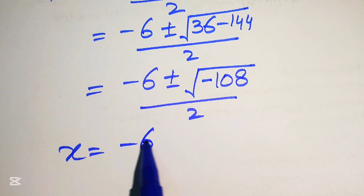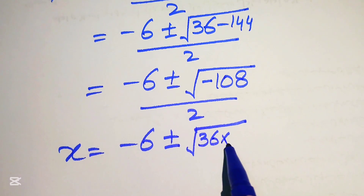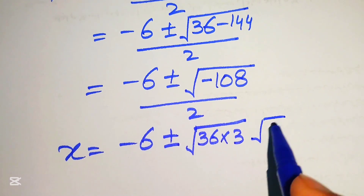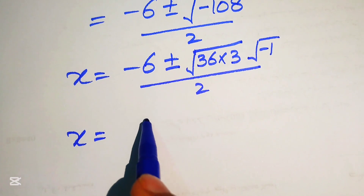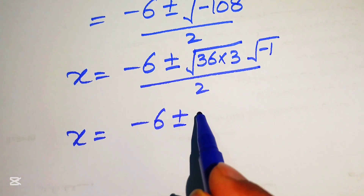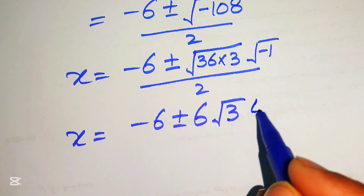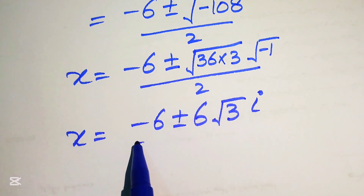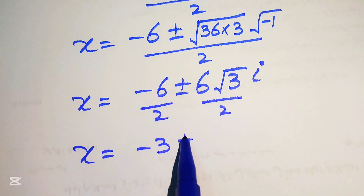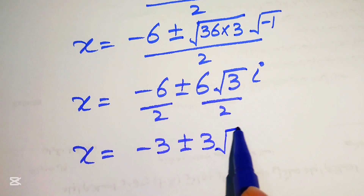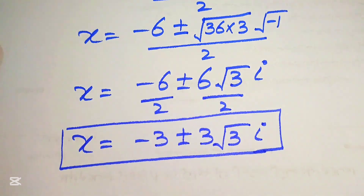We simplify √(−108) = √(36 × 3 × (−1)) = 6√3 · i. Dividing through by 2, we get x = −3 ± 3√3 · i. These are two complex roots from equation 1.